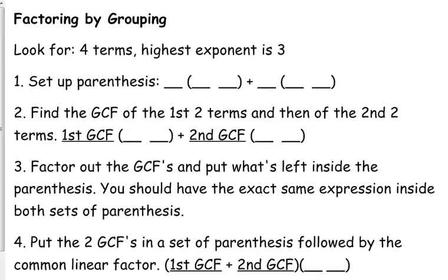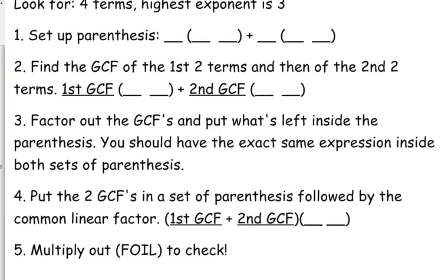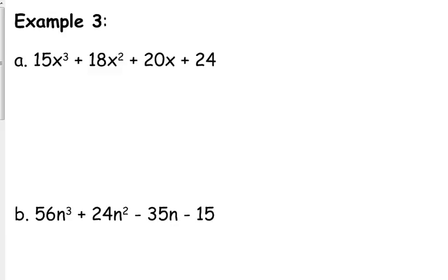So then after that, you're going to put the two GCFs together in a set of parentheses. So we're rearranging this expression. We put those together in a set of parentheses and then our common factor goes in the second set of parentheses. And then you can always multiply it out. Foil, box, whatever method you can use to check. Alright. So let's see how this goes.